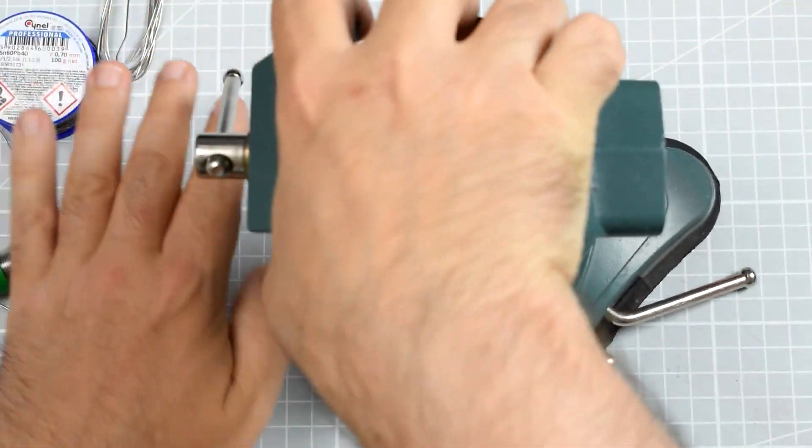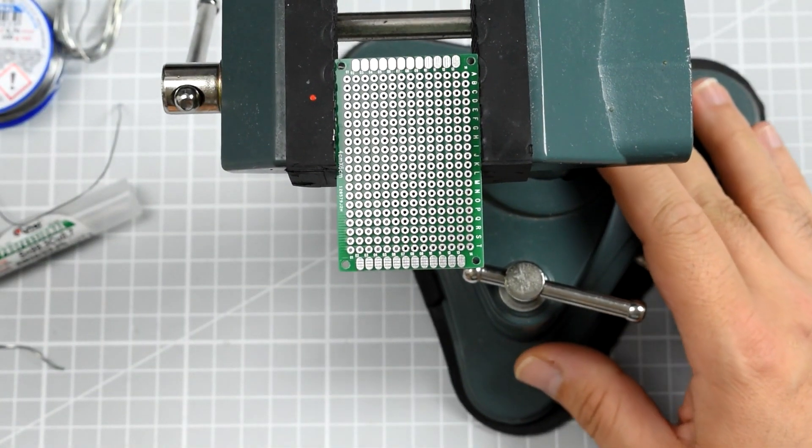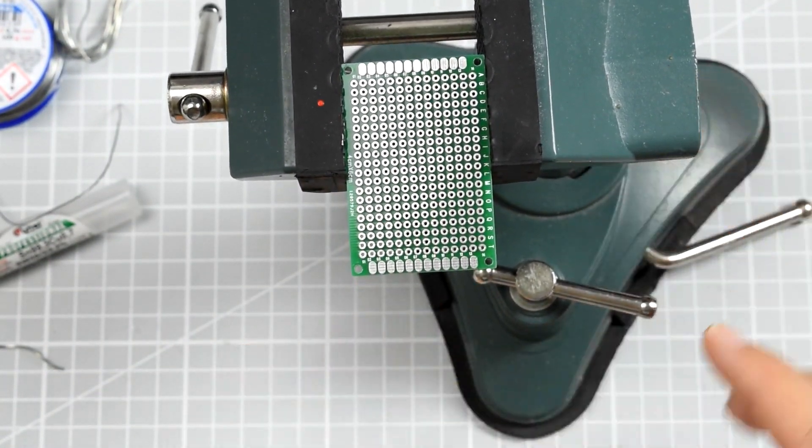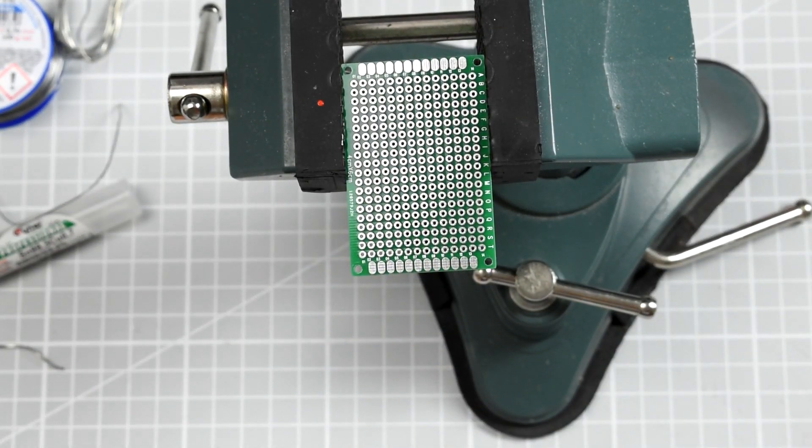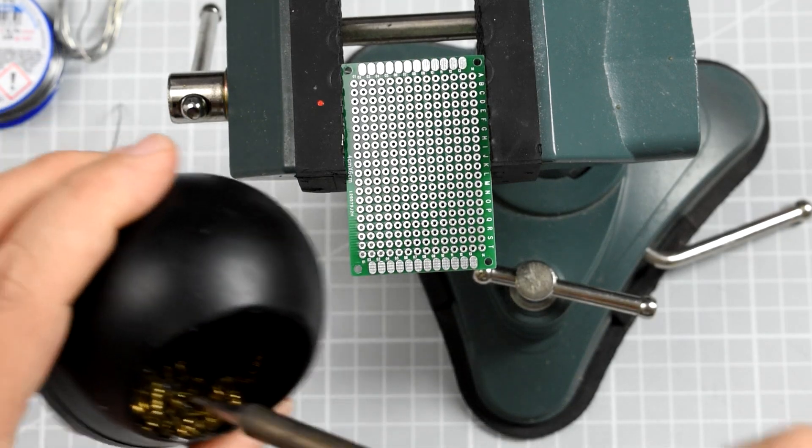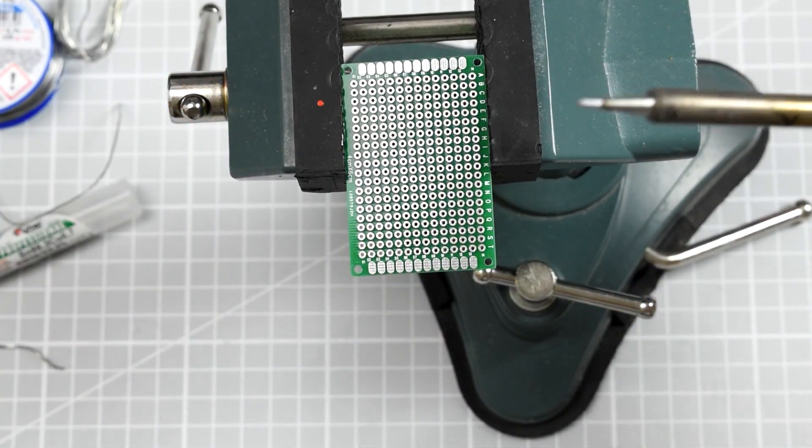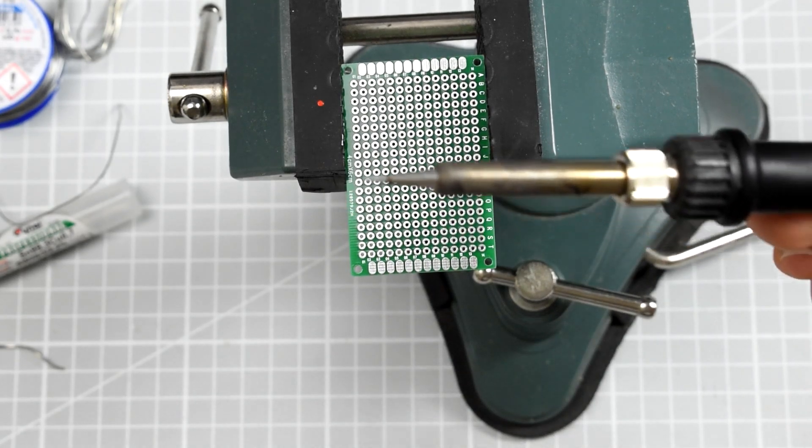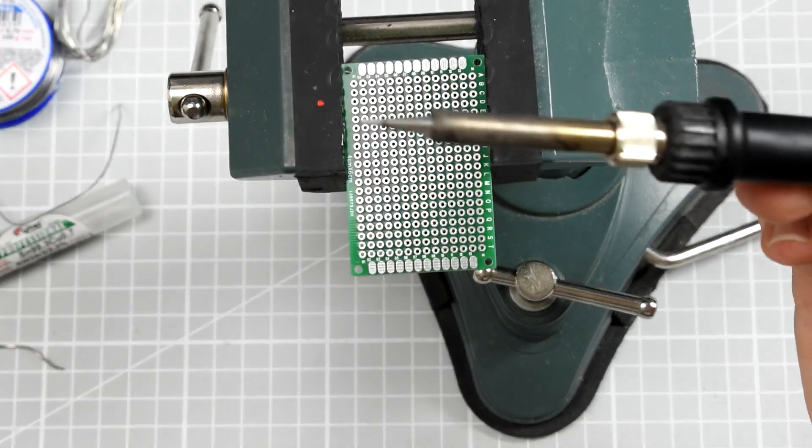So I have the universal PCB with some soldering pads. I have my soldering iron which right now I'm going to clean. The soldering iron is set to 350 degrees Celsius or 660 degrees Fahrenheit.